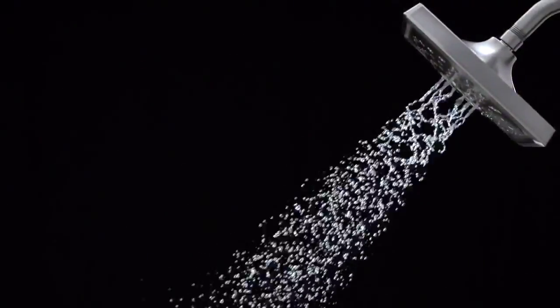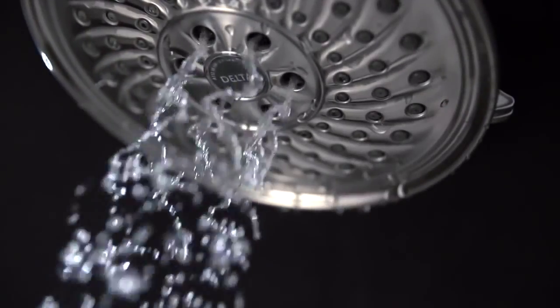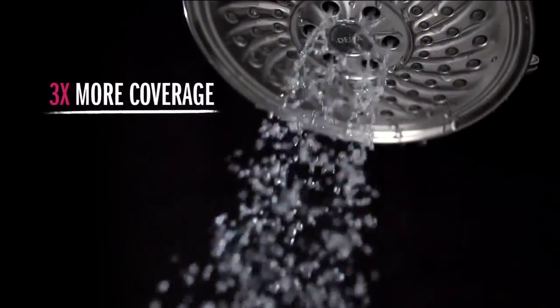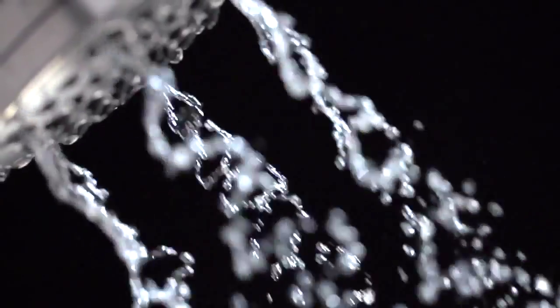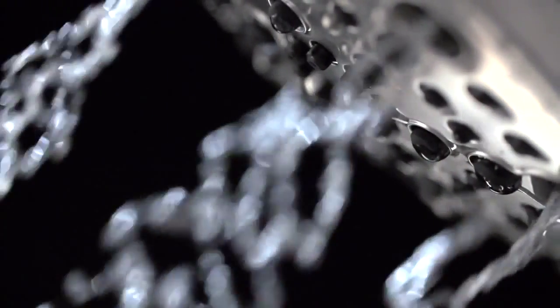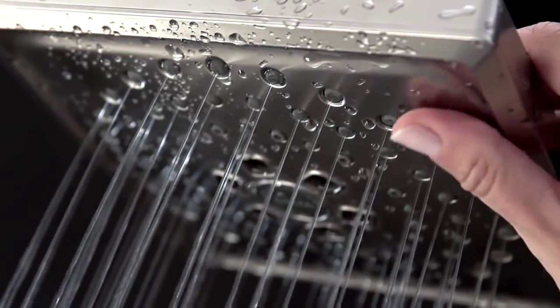By controlling the speed, movement and droplet size, H2O kinetic showers provide three times the coverage while saving water. An oscillating spray pattern prevents mineral buildup, while the touch clean spray holes means cleaning with just the touch of a finger.